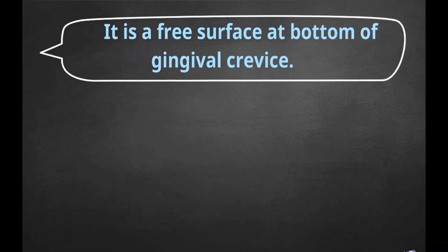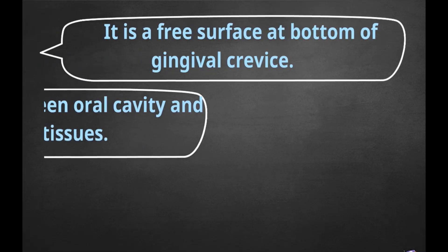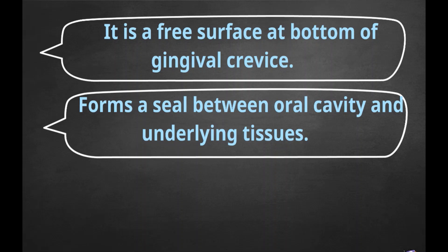Junctional epithelium is a free surface at the bottom of the gingival crevice. It attaches to the tooth and forms a seal between the oral cavity and underlying tissues.